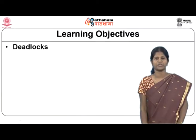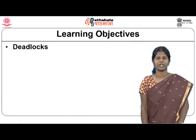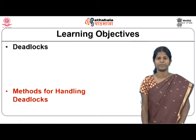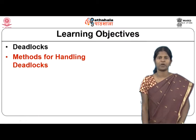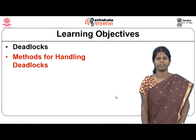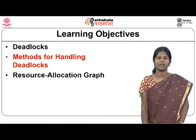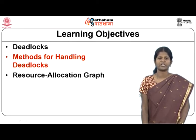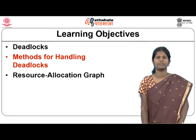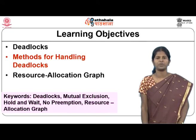The learning objectives for this class are to understand what is meant by a deadlock in a system, to learn the different methods for handling deadlocks, and to know what a resource allocation graph is and how it can be used for handling deadlocks.